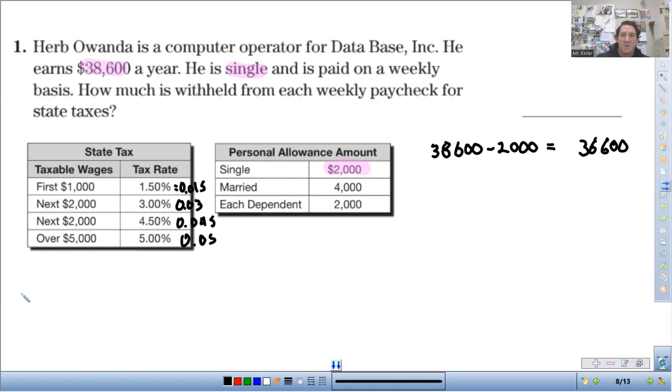Next thing that we're going to do, this is going to be the same amount for every problem we do. So first thing, I'm going to take the $1,000 and multiply it times the 1.5% as a decimal. That is $15. So his first $1,000 gets taxed $15 out of that.